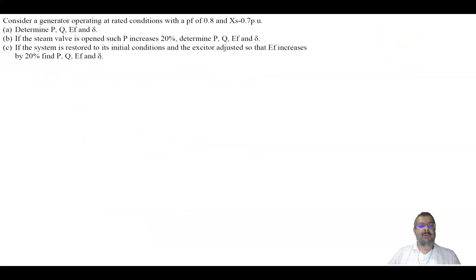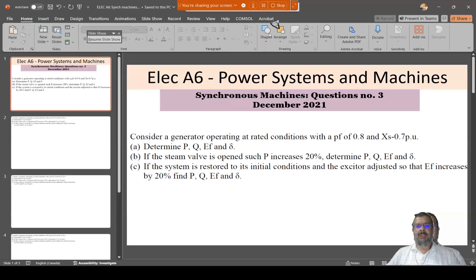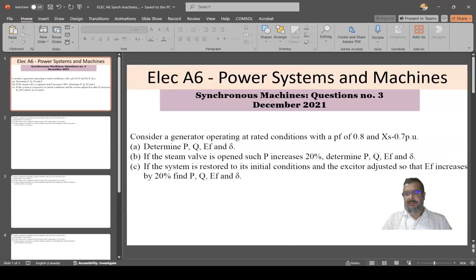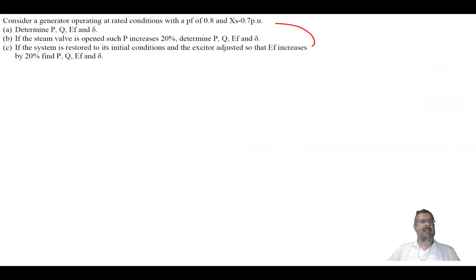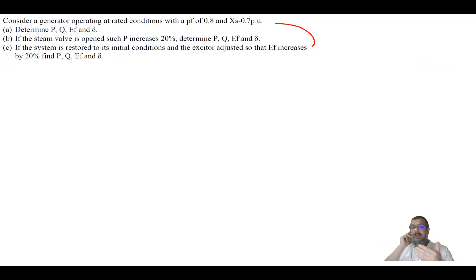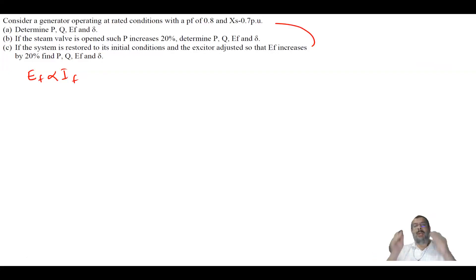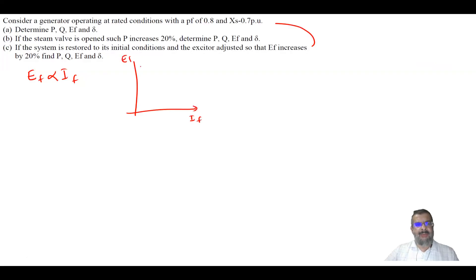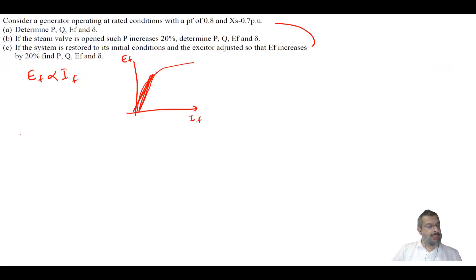For Part C, the system is restored to initial conditions, then the exciter is adjusted. The exciter controls EF, which is the field voltage. Increasing the field current IF increases EF proportionally, since in the linear region EF is proportional to IF. So an increase of 20% in IF leads to a 20% increase in EF.